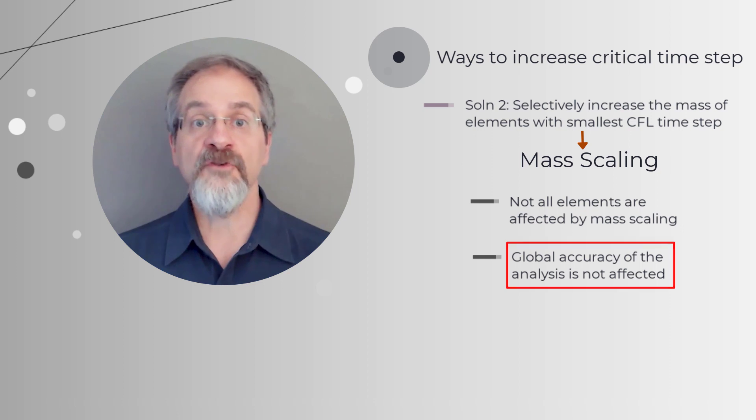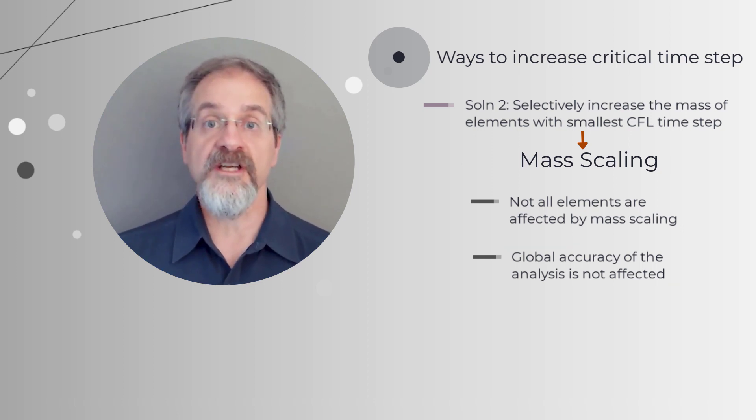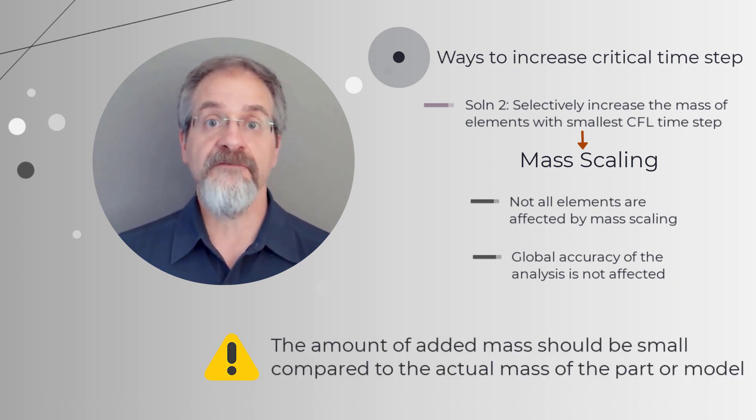If the mass of too many elements is scaled, the global inertia changes, and this in turn changes the physics of the problem. Thus, abusing mass scaling can lead to erroneous results.